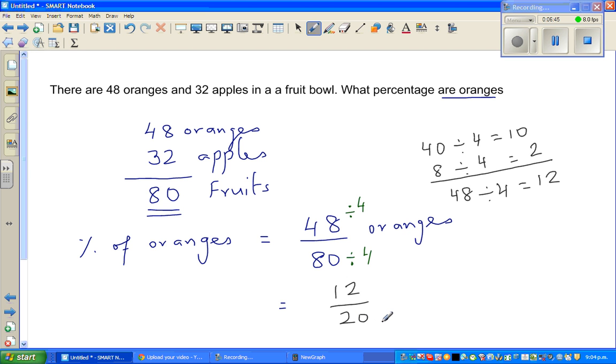Now, if you want to write this out of 100, well, 20 goes in 100 how many times? 20 goes in 100 5 times. So if you multiply the denominator with 5, also multiply the numerator with 5. So this is 60 out of 100. And this as a percent is 60%.